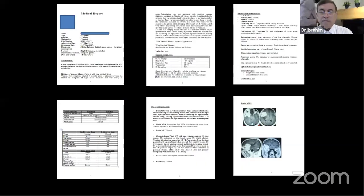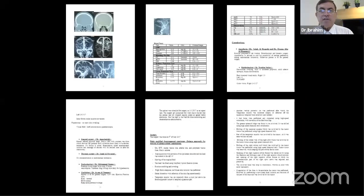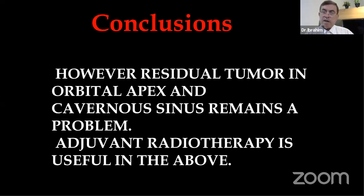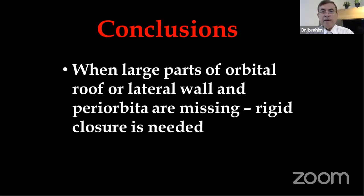Our routine discharge summary is comprehensive — it mentions everything done for the patient in figures and numbers, with recommendations. In conclusion, I believe strongly that aggressive removal is critical for favorable outcome. Sometimes you have to leave tumor at the orbital apex or cavernous sinus and give radiotherapy. When large parts of the orbital roof or lateral wall are missing, you may need orbital reconstruction. Thank you very much.